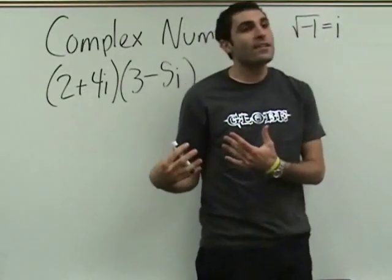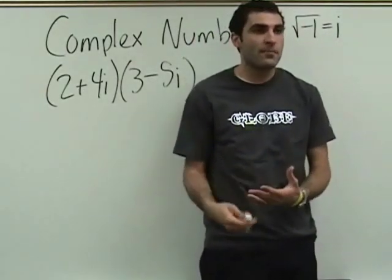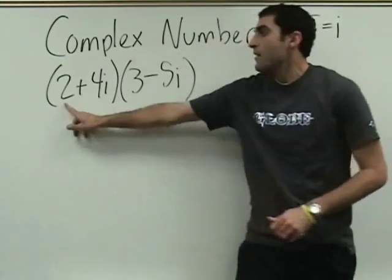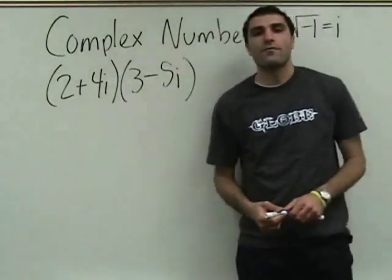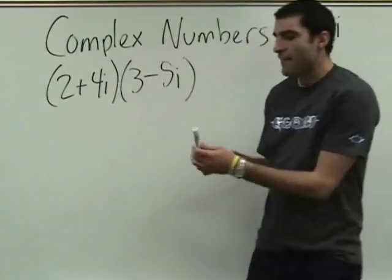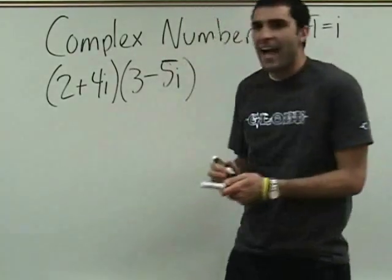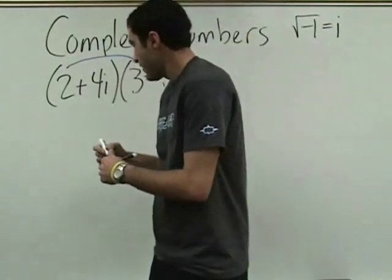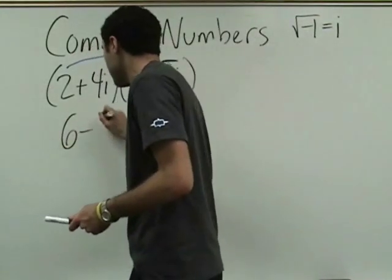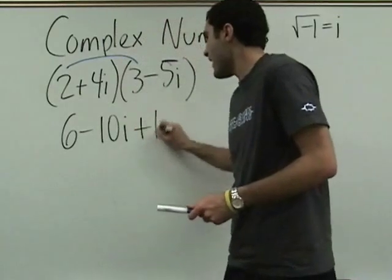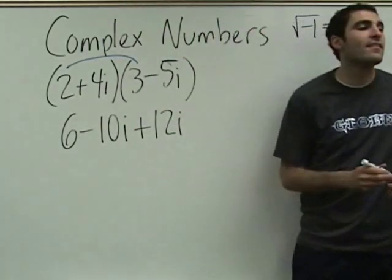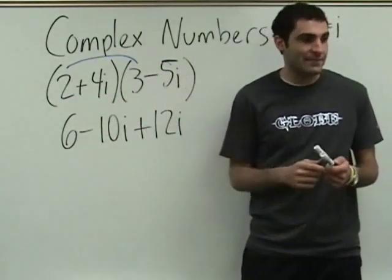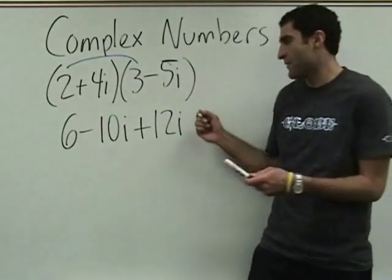Is this a FOILing problem? Yes, we do FOIL this. Please recycle when you're done using your foil. FOIL — first, outer, inner, last. 6 minus 10i, right? 6 minus 10i. Plus 12i. Minus 20i squared. What's 4i times negative 5i? Negative 20i squared. Okay — i squared.